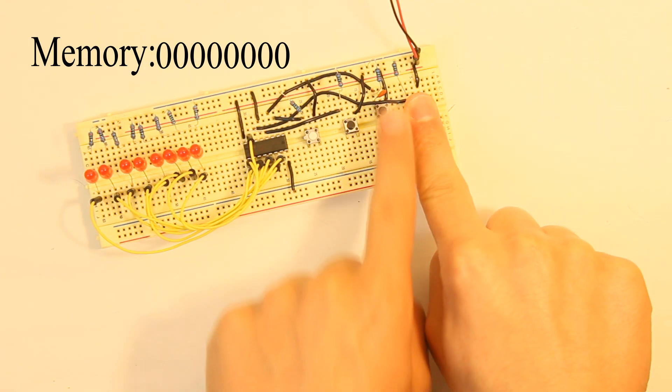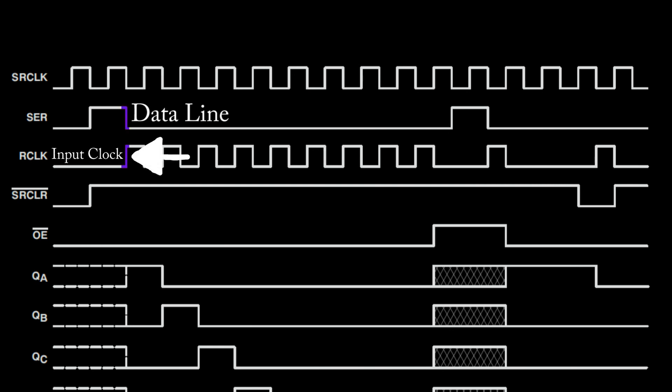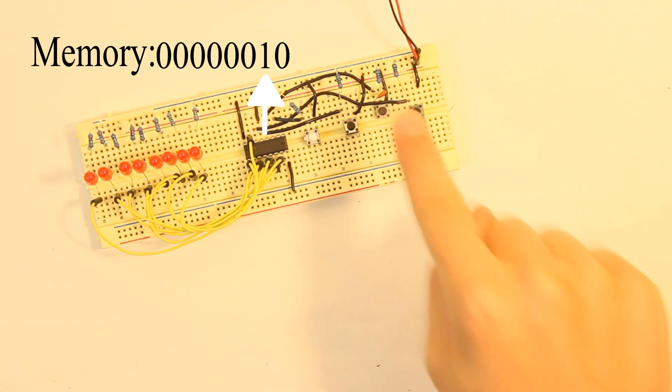I will hold down the data line button and push the input clock button. This will put a logic value of one into the first place in the shift registers memory. The memory samples the data line on the input clock's rising edge. Next, I will push the input clock button without pushing the data line button. This will move logic one over and put the logic zero value in its place.